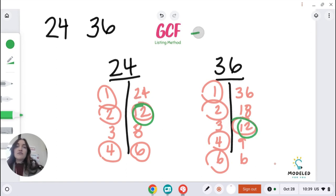So your greatest common factor for 24 and 36 is 12. Hope this helps, and I'll see you on another video by Modeled for you.